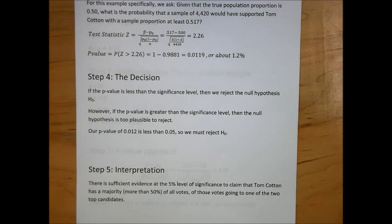Our interpretation of these results is that there is sufficient evidence at the 5% level of significance to claim that Tom Cotton has a majority, that is, more than 50% of all votes, of those votes going to one of the two top candidates.